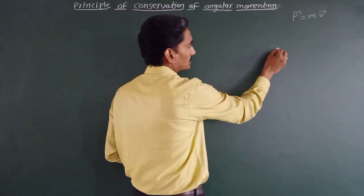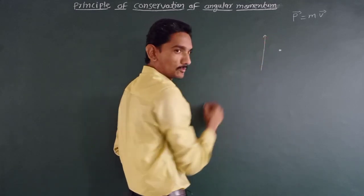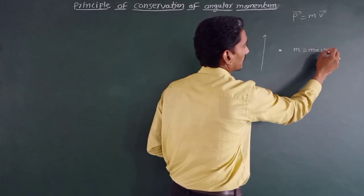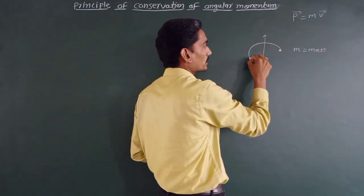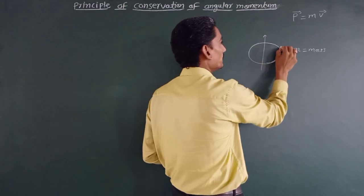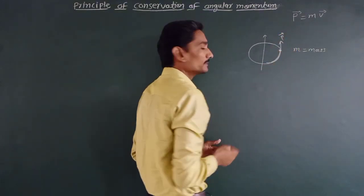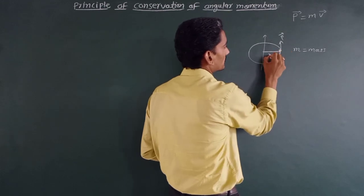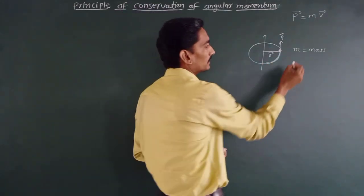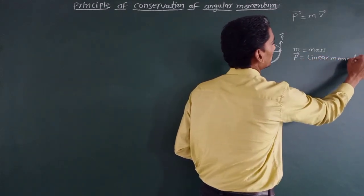For this purpose, suppose we have a particle performing rotational motion about an axis of rotation. This particle has mass m and is performing rotational motion about this axis. Then p is the linear momentum for that particle, and r vector is the position vector for that particle. So this is the particle having mass m and linear momentum p.